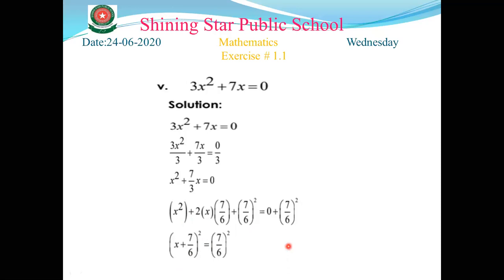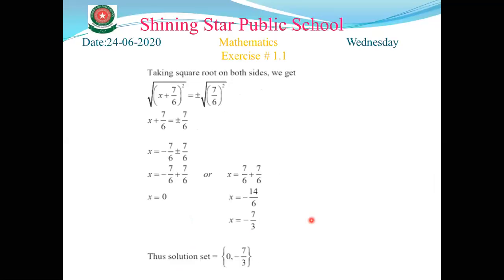The fifth step: take the square root on both sides. The square on the left cancels with the square root, leaving x + 7/6 = ±7/6. The sixth step: take the constant 7/6 to the right-hand side.